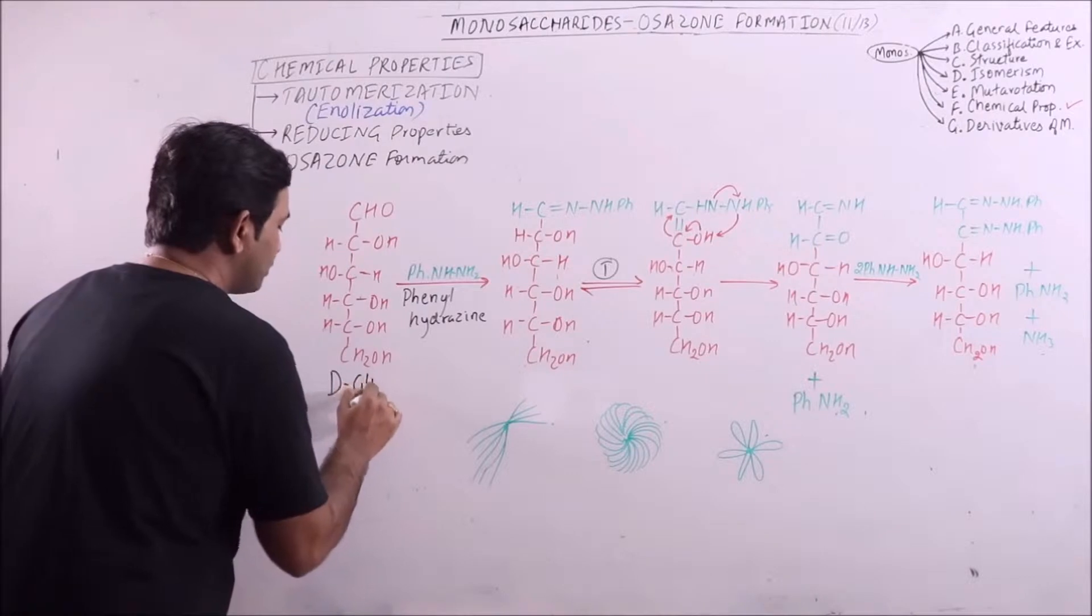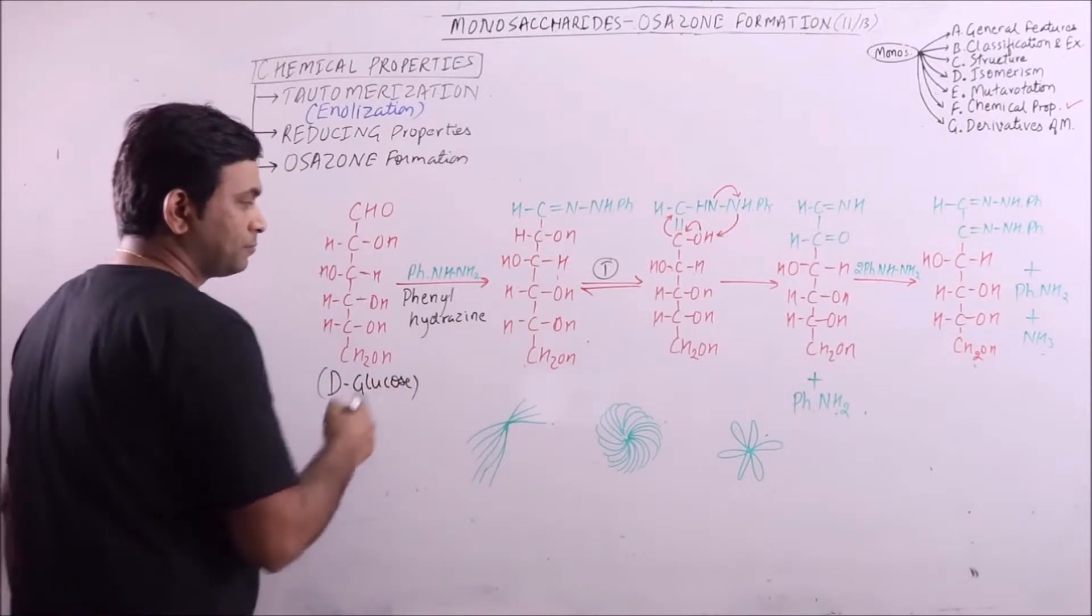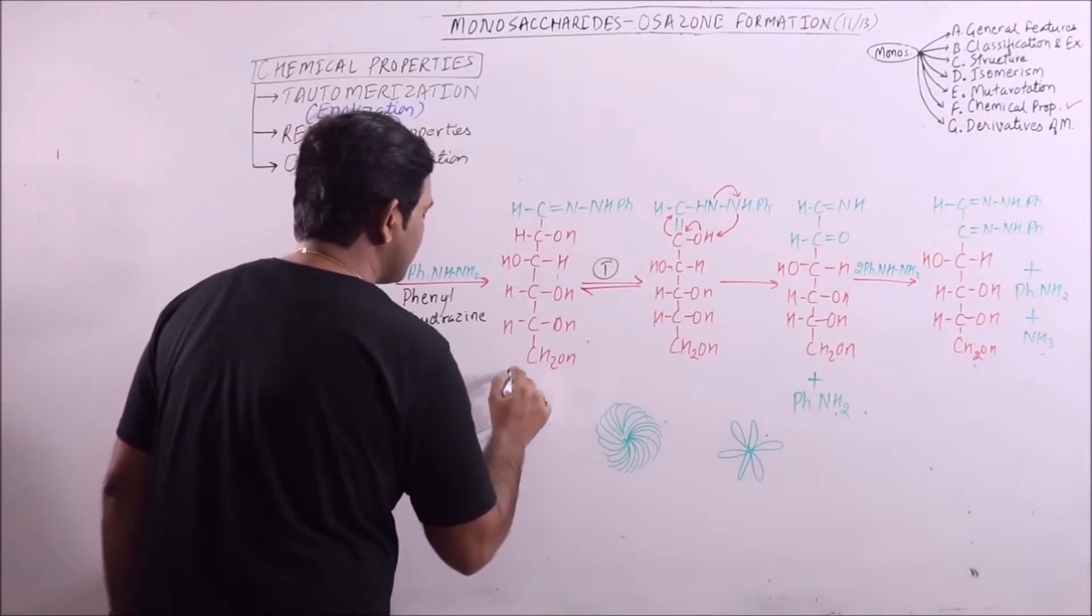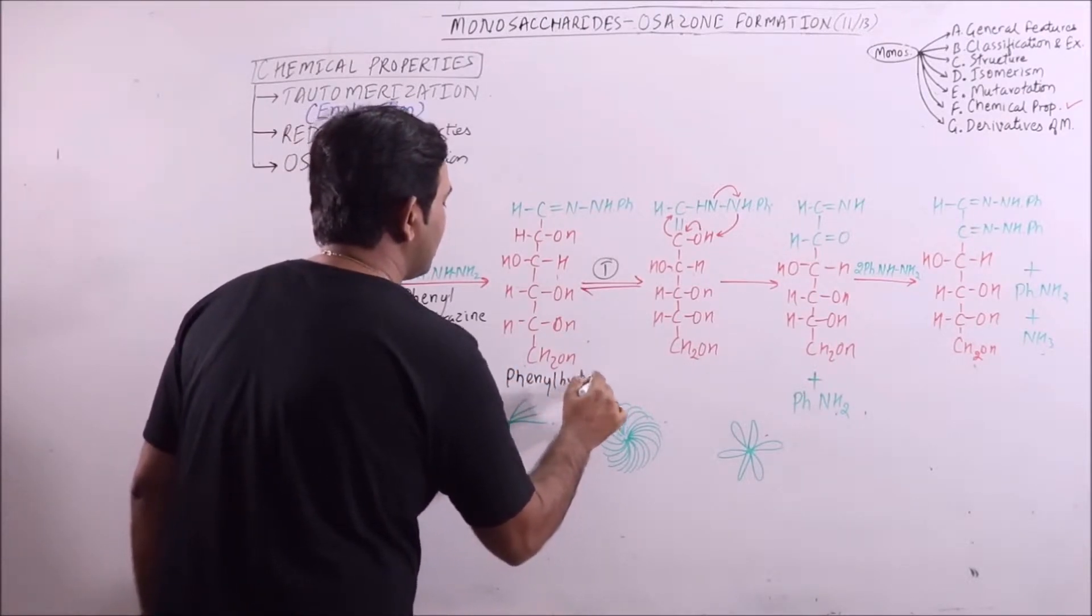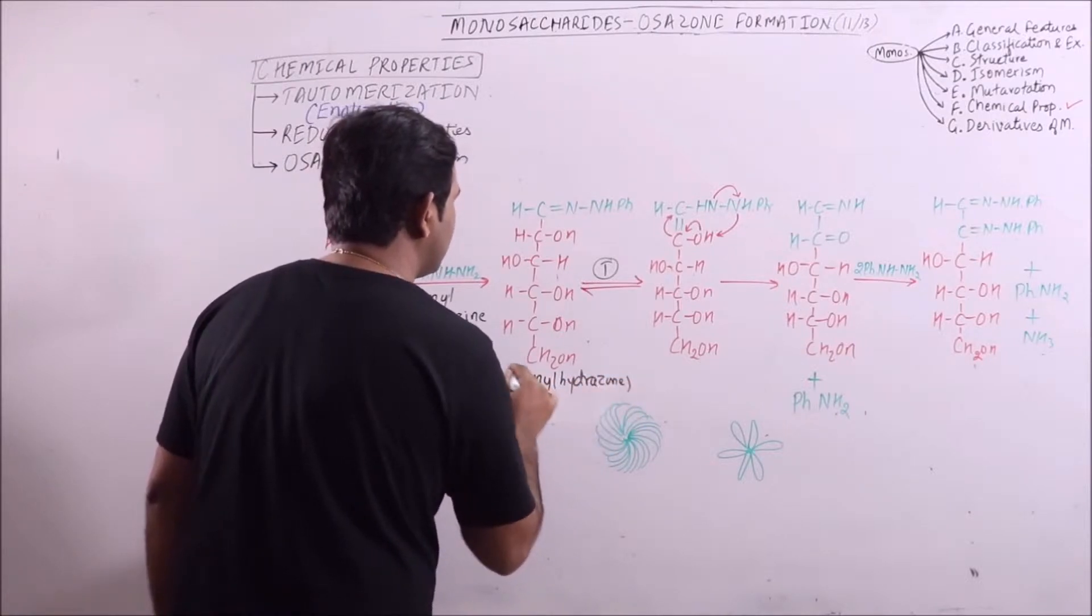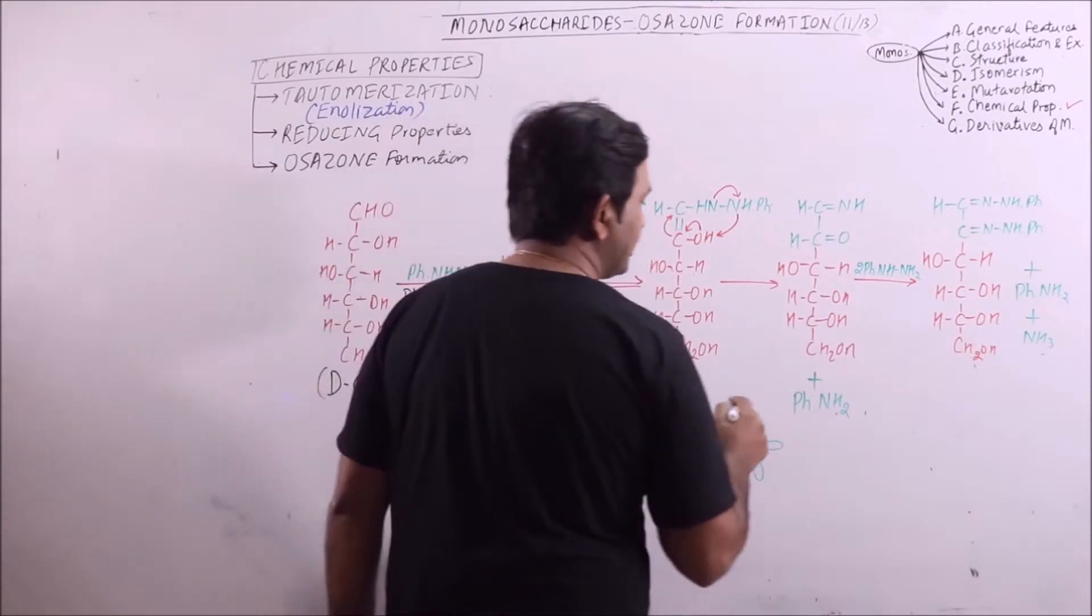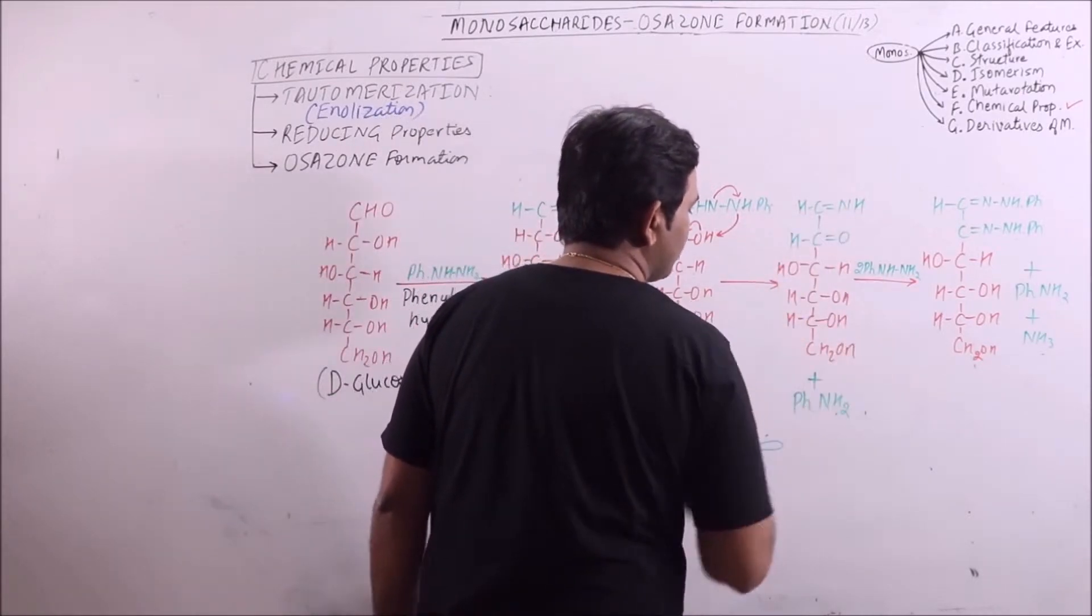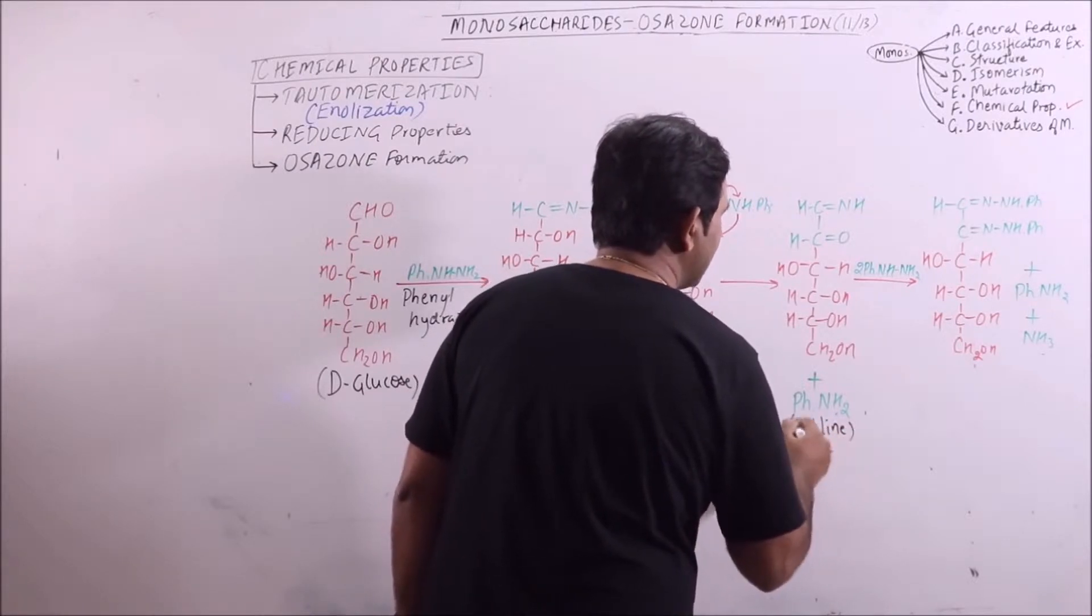If we take a monosaccharide like D-glucose and add phenylhydrazine, then phenylhydrazone is formed which undergoes tautomerization and finally results in formation of this product and release of aniline.